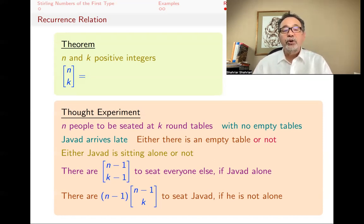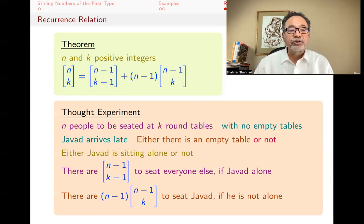So there's n-1 choices for that. So the total number of ways of seating Javad, if he's not alone, is (n-1) times [n-1, k]. And the sum of these must be the total number of ways of sitting n people around k tables, k non-empty tables. And so we have this recurrence relation.